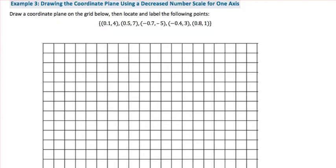In example 3, looking at the coordinates that we are supposed to graph, we have 1 tenth, negative 7 tenths, and actually nothing larger than 1 in our x-axis. And then in the y-axis, we have a low of negative 5 and a high of 7. So our y-axis looks like we should count by 1s, and our x-axis looks like we should count by 1 tenths so that we can be more accurate.